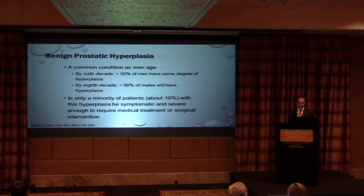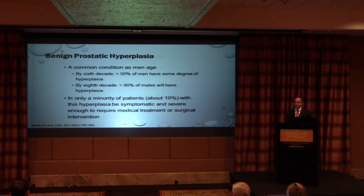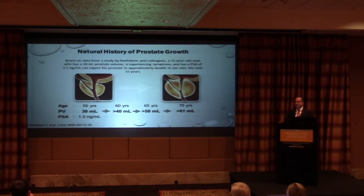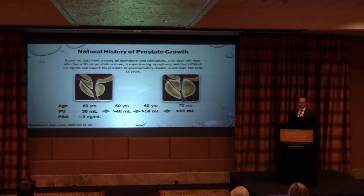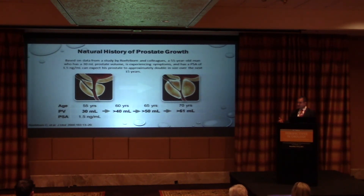What about the prostate? It gets bigger as we get older, but that doesn't mean it becomes symptomatic — only about 10% of patients will become symptomatic. It either grows out or grows in; if it grows in, it causes blockage and poor flow — that's where you get symptomatic. If your PSA is elevated — a surrogate marker for prostate size — and your prostate is about 30 grams at age 55, you can expect it to be about 61 grams by age 70. If you're symptomatic at 55, you're going to be more symptomatic at 70. We should tell the patient ahead of time what to expect.